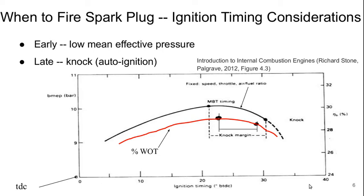Here we see ignition timing plotted with degrees before top dead center on the horizontal axis, where zero is top dead center at the end of the compression stroke, and brake mean effective pressure on the vertical axis. At wide-open throttle or partially open throttle we see the same general shape, though the curve compresses at partial throttle. At a given speed, throttle, and air-fuel ratio, changing the ignition timing varies the mean effective pressure achieved. We don't want to get too close to the knock limit, so it would be common to set ignition timing a little before the absolute peak of this curve to provide sufficient knock margin.